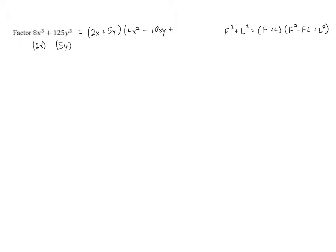And then plus the last one squared. When you square 5y, you end up with 25y squared. And so when we apply the formula for factoring, we end up with 2x plus 5y times 4x squared minus 10xy plus 25y squared. And this is our final answer.